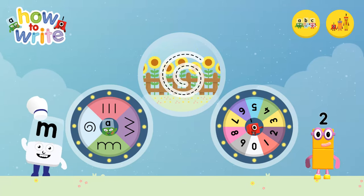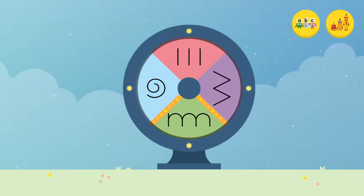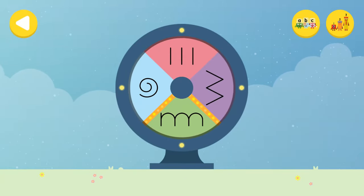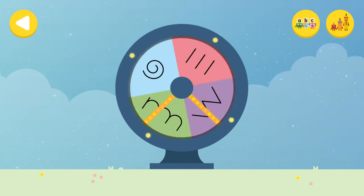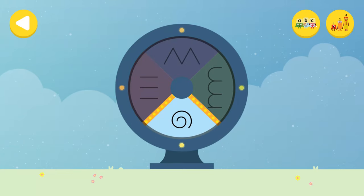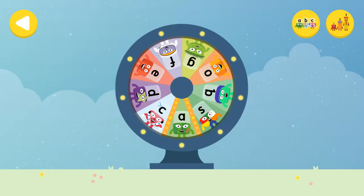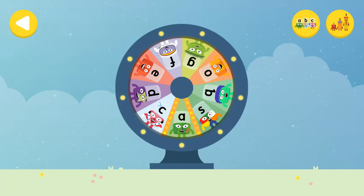Alpha Blocks and Number Blocks: How to Write! What would you like to do? Let's choose a letter family. Touch or drag the wheel to spin. Well done! You've landed on the curly letter family. Spin the wheel again and find out which Alpha Block you're going to help.